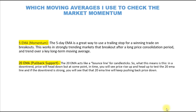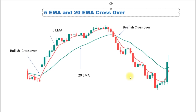Now we can see the 5 EMA and 20 EMA crossover. The red EMA is the 5 EMA and the green EMA is the 20 EMA. This is a bullish crossover. When the 5 EMA crosses the 20 EMA upside, that is a bullish crossover and price is heading up. When the 5 EMA crosses the 20 EMA downside, that is a bearish crossover and price is going into a downtrend.